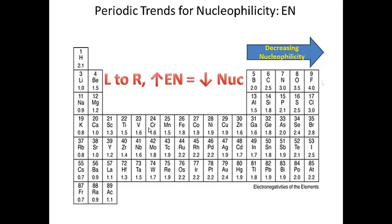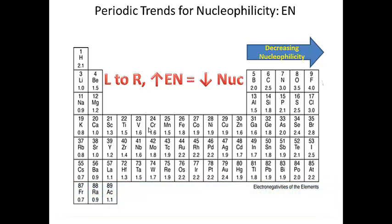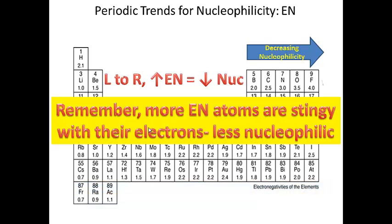What periodic trends can we use to determine nucleophilicity? In general, as you increase electronegativity, nucleophilicity decreases. A more electronegative atom is going to be a worse nucleophile than a less electronegative atom. So from left to right across the periodic table, as electronegativity increases, nucleophilicity is decreasing. More electronegative atoms are more stingy with their electrons, so they don't react as well with electrophiles — we say they're less nucleophilic.